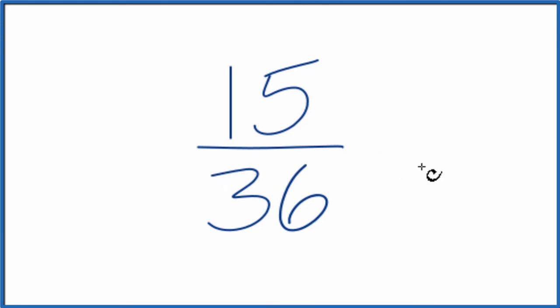When we do that, we have to find a common multiple, the greatest common multiple. Let's list the factors of both the numerator here, 15, and the denominator, 36. We'd have 1 times 15, that equals 15, 3 times 5, and I think that's it.